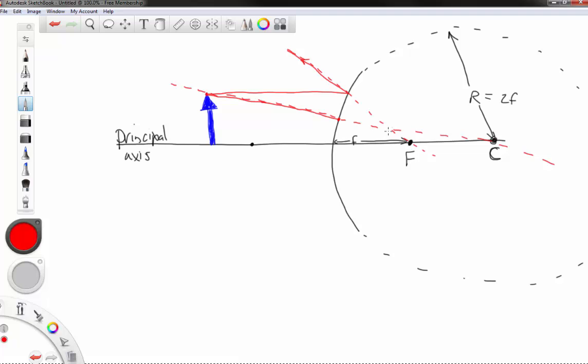Where these two dashed lines intersect, that is where you're going to form the image of this object. So the image in this case is maybe like this. So here is the image of the arrow. This point where these intercept is actually where the tip of the arrow happens to be.